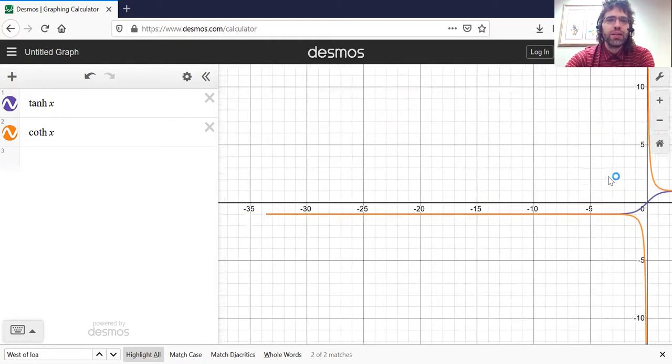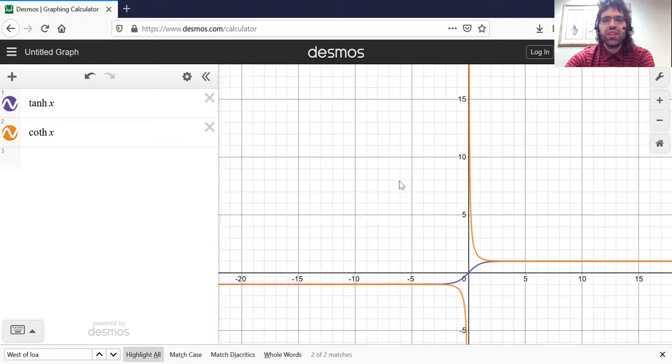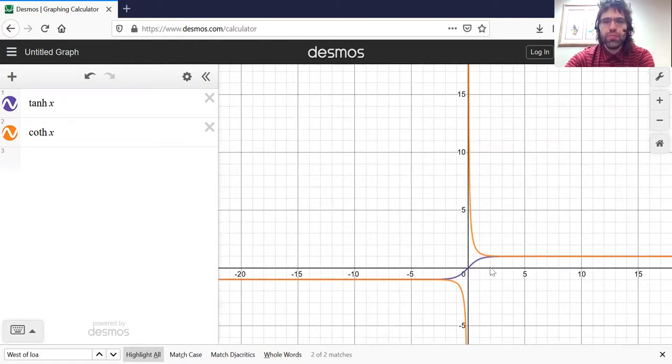When x is large, these things are visually indistinguishable. And when x is small, these curves are visually indistinguishable. It's only when x is near zero that we see this difference.